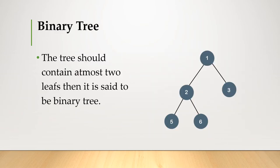Next is binary tree. A binary tree should contain at most two leaves or two children. Here is the example: 1 is the root node and 2, 3 are the leaf nodes of root node 1. Again, 5 and 6 are the leaf nodes of 2. Only two leaf nodes are present because it should not contain more than two leaf nodes.